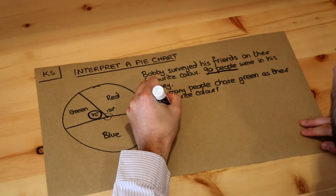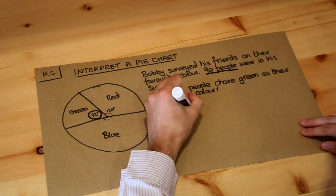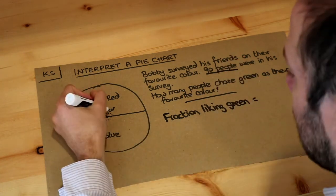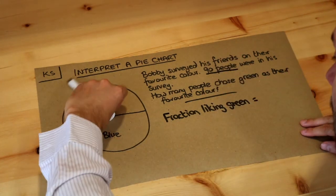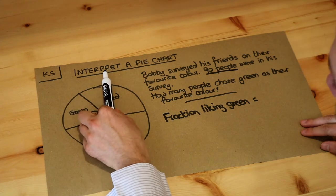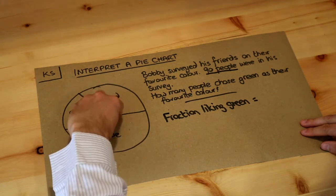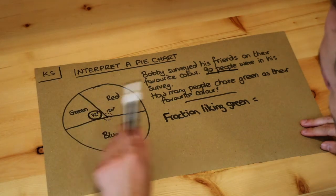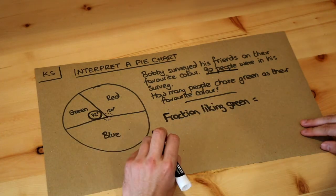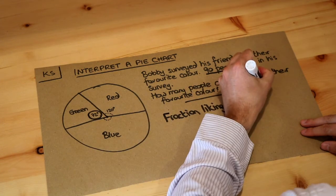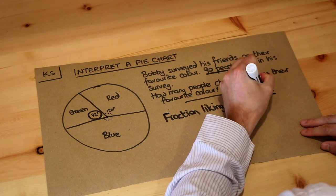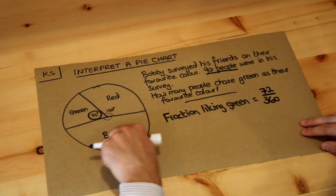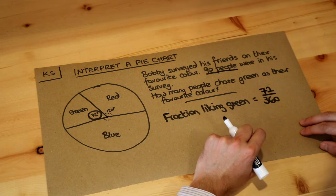Let's first think: what's the fraction of people that like green? The full angle at the centre — a full spin — is 360 degrees; that would be the full pie chart. So if this green slice is occupying 72 degrees, the proportion of the pie chart is 72 out of 360, because the full angle is 360 and we're using 72 degrees of it.